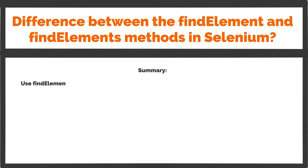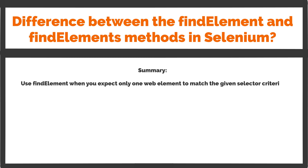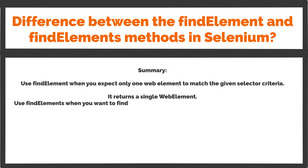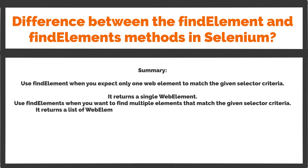Summary: Use find element when you expect only one web element to match the given selector criteria — it returns a single web element. Use find elements when you want to find multiple elements that match the given selector criteria — it returns a list of web element objects, even if there is only one matching element.